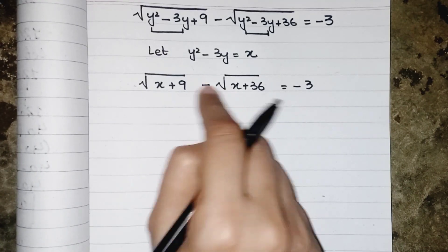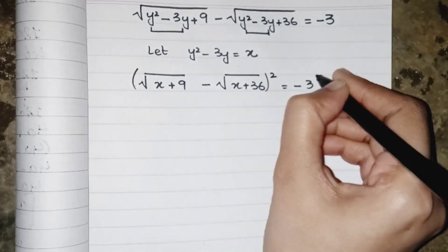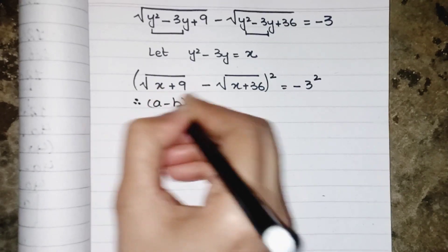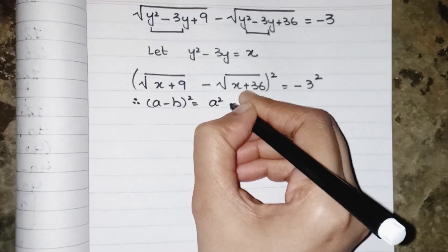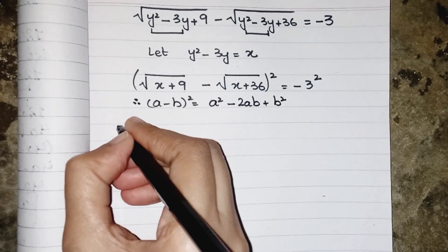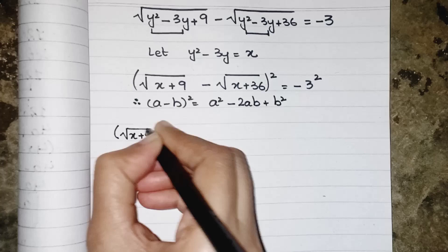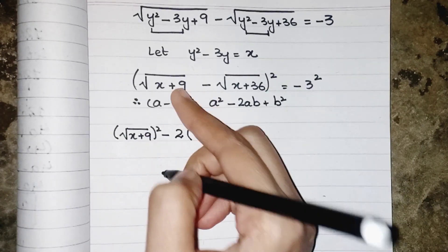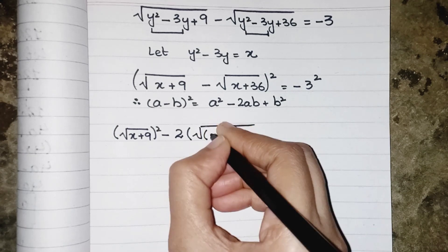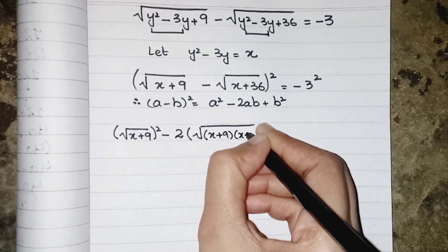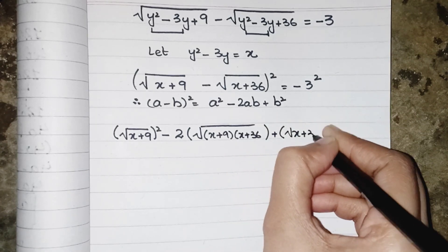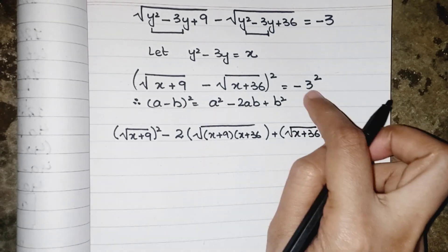To get the value of x we have to remove these roots, and to remove the roots we have to do squaring on both sides. It will become a formula of (a minus b) whole square, which equals a squared minus 2ab plus b squared. So a will be under root of (x plus 9), whole squared, minus 2ab where both a and b are inside the root, so we write 2a as x plus 9 and x plus 36.